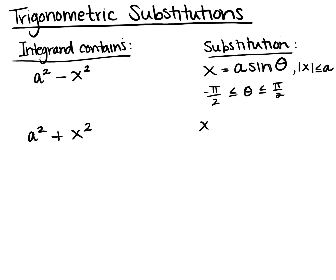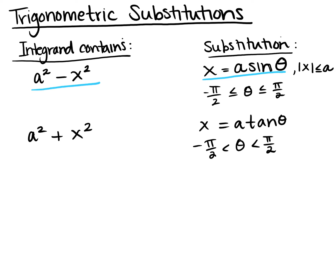For a² plus x², the substitution is x equals a·tangent of theta. Tangent doesn't require a restriction on x since squaring always gives a positive result. For inverse tangent, theta lives between negative π/2 and π/2, not equal to π/2 because tangent is undefined there.